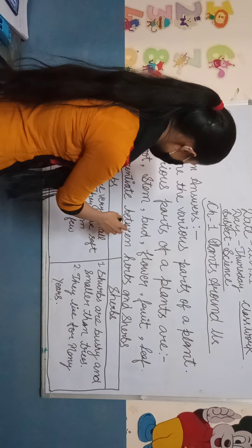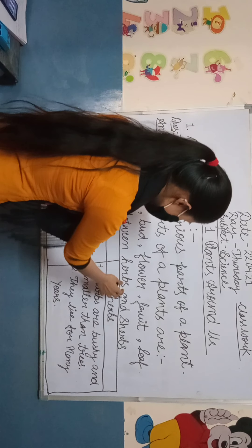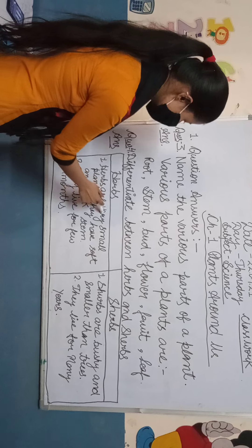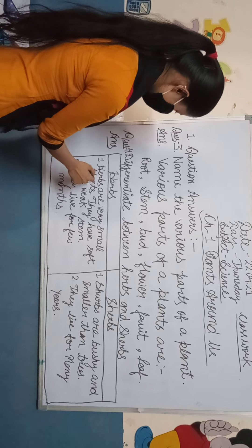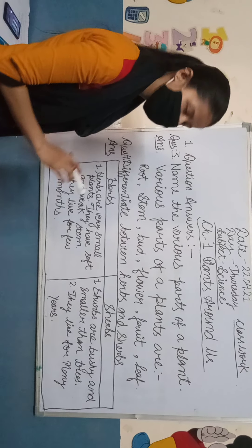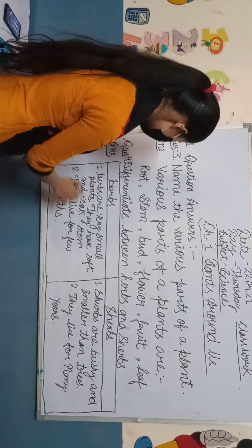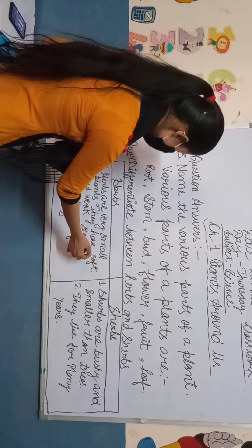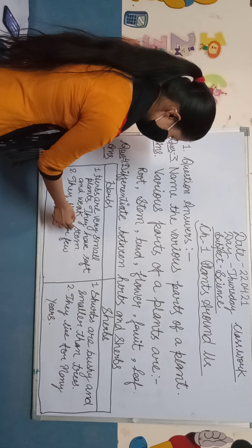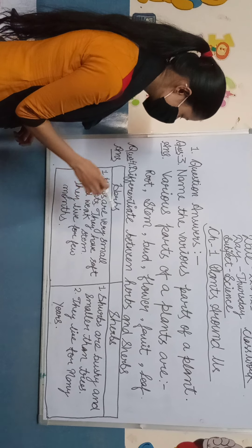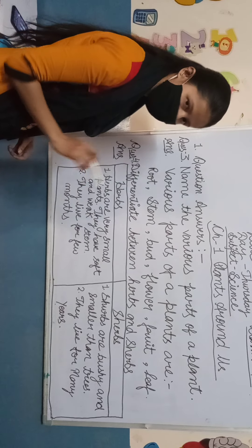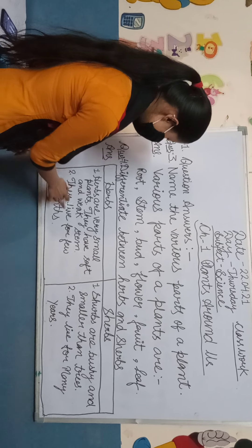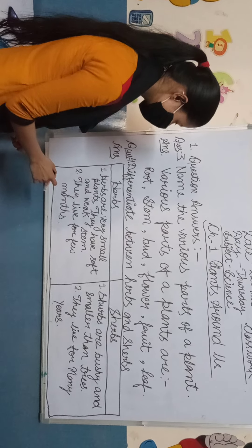Question 4: Differentiate between herbs and shrubs. Herbs are very small plants — they have soft and weak stems and live for only a few months. Shrubs are small plants with a hard and thin stem.